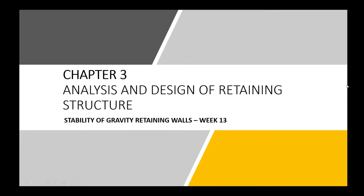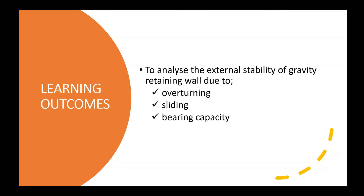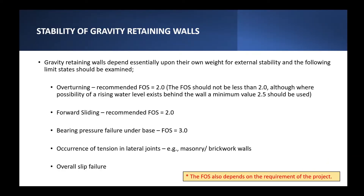This is for the analysis and design of retaining structures related to lateral earth pressure applications. To analyze or design a retaining wall, for example a gravity retaining wall, we need to analyze the external stability of that wall. External stability includes the overturning factor of safety, the sliding factor of safety, and also the bearing capacity. The gravity retaining wall depends on its own weight for external stability.